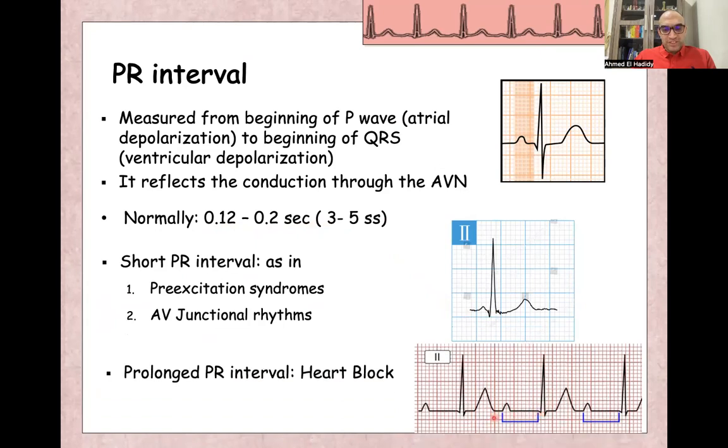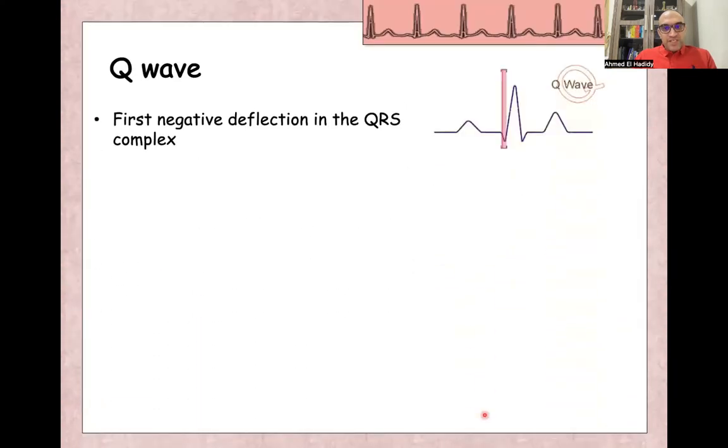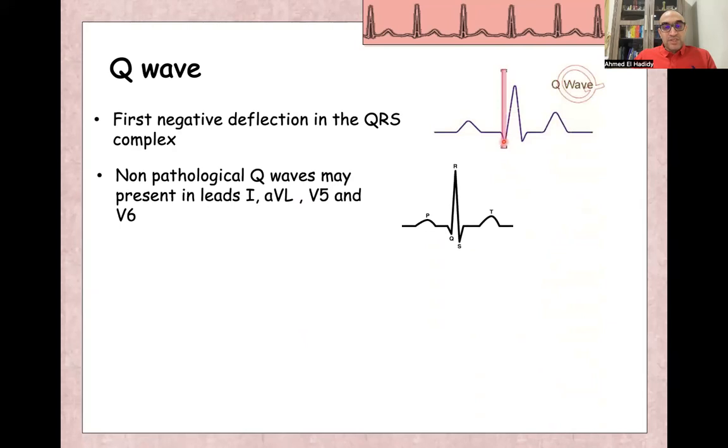It can be prolonged PR interval, more than five small squares, in heart block or other name is AV nodal block. Q wave is the first negative deflection in the QRS complex, first negative wave in QRS complex, and it represents the septal depolarization.